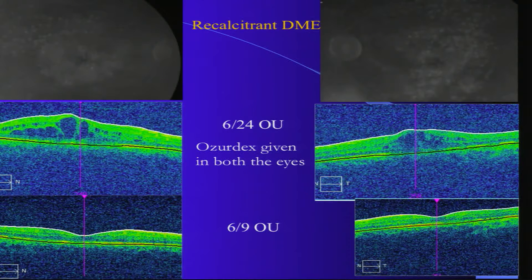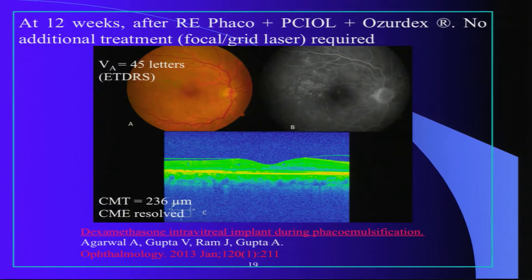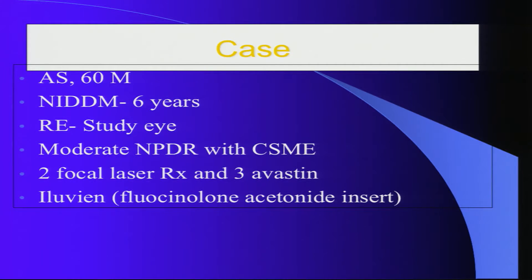In one refractory case that had undergone so many treatments — you can see how heavy the grid laser scars are — after multiple anti-VEGFs it responded very well to Ozurdex. In cases where triamcinolone has been given, laser has been done, and many things have been tried, this work was published in Ophthalmology from our group at BGEI. Many people would now like to give Ozurdex on the table and perform cataract surgery simultaneously.